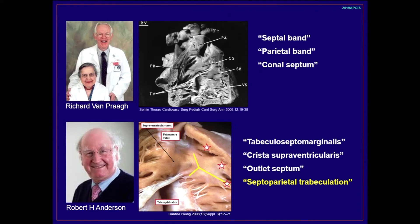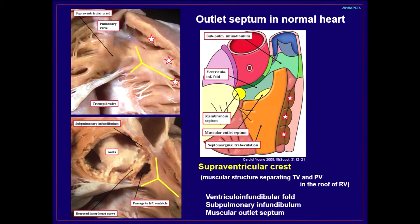For the septum separating the two outlet valves, Dr. Bumpurra called it 'conal septum,' but Dr. Anderson described it as 'outlet septum.' Dr. Anderson also specified the septal parietal trabeculations, which are multiple muscular bundles extending from the anterior limb of the trabecular septum marginalis toward the free wall of the right ventricle. Dr. Anderson beautifully showed us a small outlet septum in the normal heart through meticulous dissection. He defined the crista supraventricularis as a muscular structure separating the tricuspid valve and pulmonary valve in the loop of the right ventricle.